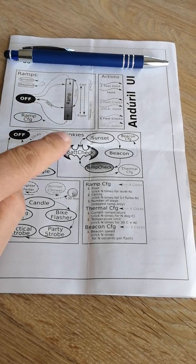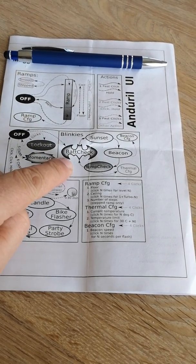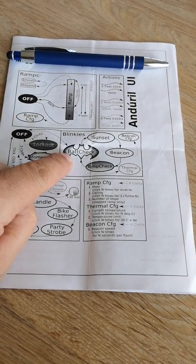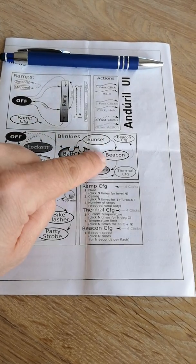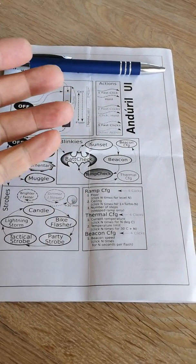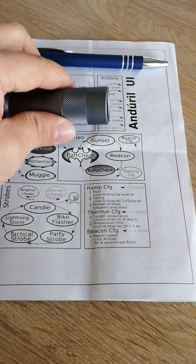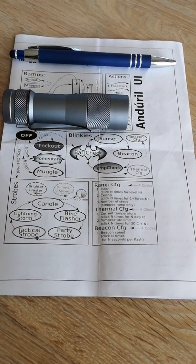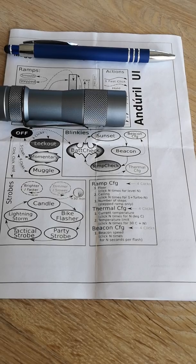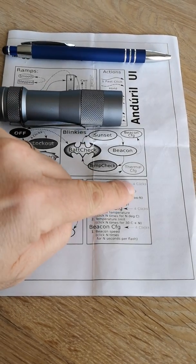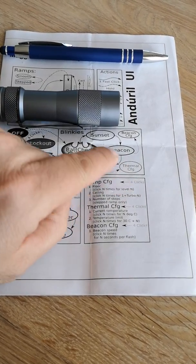With a triple click we go into the blinkies. We start in the battery check, then double click to sunset, double click to beacon, double click to temp check. Then we have time to read what the flashlight is actually reading. If that's not correct we can quad click to the thermal configuration.